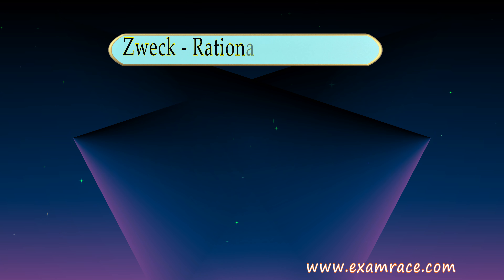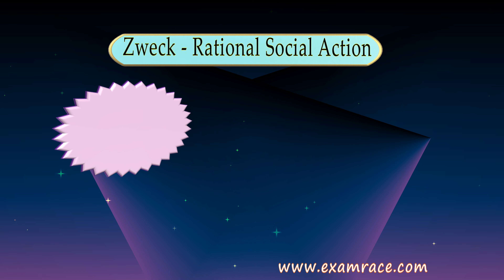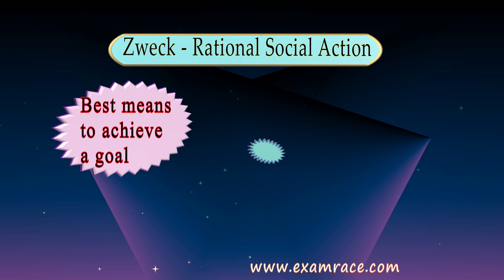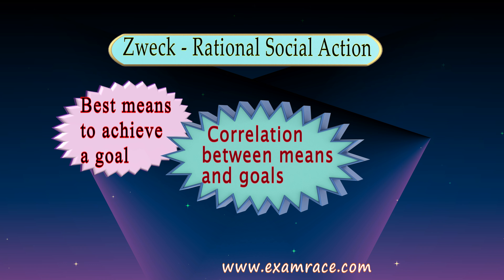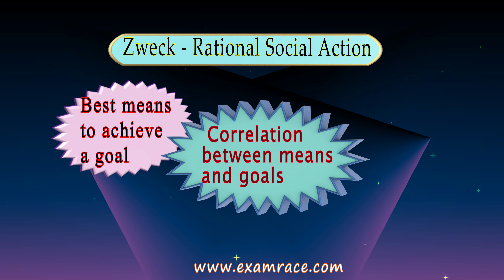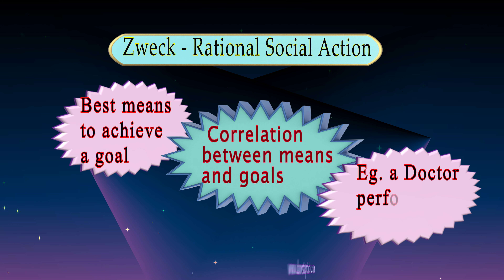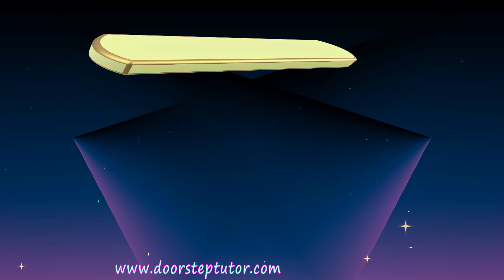Zweck rational social action, as the name suggests, talks about the best means to achieve the goal and there is always a correlation between means and the goals. For example, a student working very hard, studying for very long hours for his exams in order to get good marks, or a doctor performing a surgery to save a person's life.